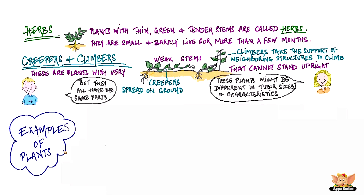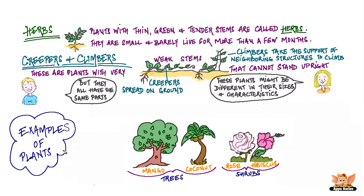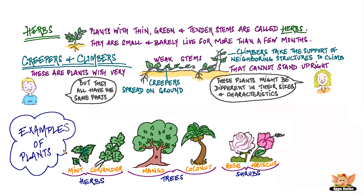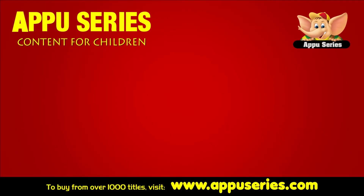Now let's look at some examples of these plants that we see in our surroundings. Mango and coconut are some examples of trees. Rose and hibiscus are shrubs. Mint and coriander are some examples of herbs. Watermelon is a creeper, and money plant is an example of a climber.